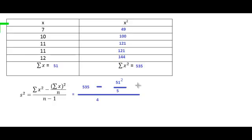Next step, let's simplify this. Let's do the 51 squared. 51 squared is 2601. Divide by 5. And divide all that by 4. Let's move to the next line to simplify this a little bit more. We have 535 minus 2601 divided by 5 is 520.5. Then divide by 4.